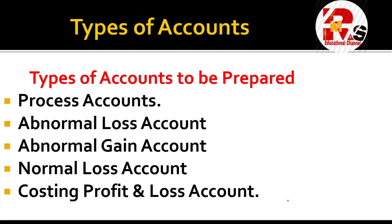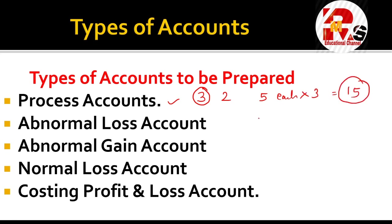There are different types of accounts to prepare in process costing. First are the Process Accounts — typically three processes, each carrying 5 marks, totaling 15 marks. The remaining 5 marks may include an Abnormal Loss Account and Abnormal Gain Account. There is also a Normal Loss Account and a Costing Profit and Loss Account. For stock level questions, there can be 3 process ledgers and 3 stock ledgers.